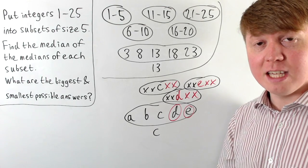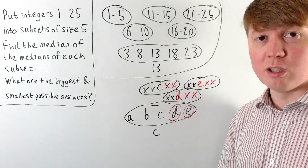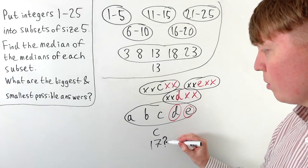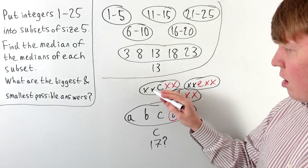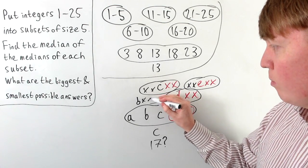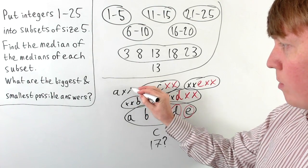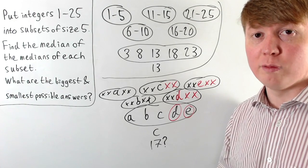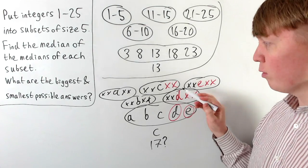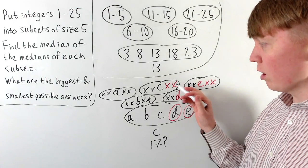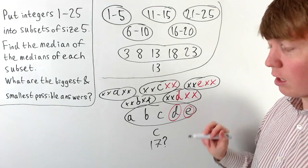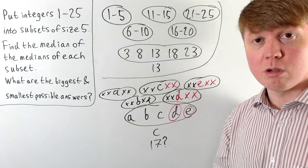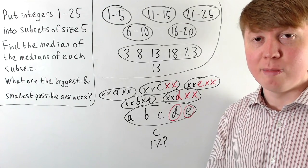This rules out everything from 18 up to 25, because 18 has only seven values bigger than it — we couldn't find a way of making this work with eight values bigger than 18. So it seems like 17 might be the biggest possible value for our median of medians. There are no particular restrictions on the sets for A and B, so let's see if we can construct an example where our final median is 17, which would confirm that 17 is the biggest possible value.